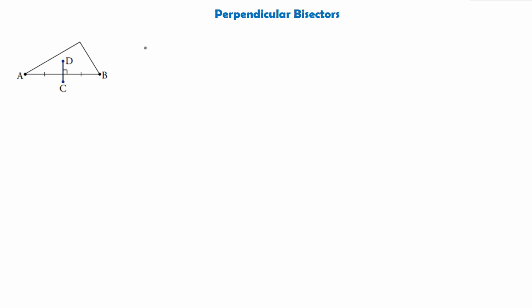So far at higher we have looked at two types of straight lines called medians and altitudes. Today we're going to be looking at a line called a perpendicular bisector, and I'm going to be explaining what it is using this diagram of triangle AB.